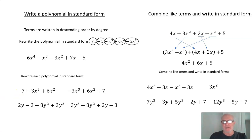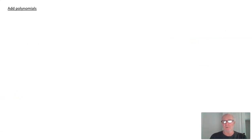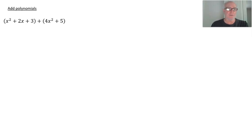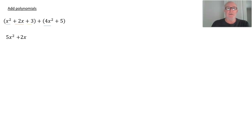Now we want to add and subtract polynomials. First, we're going to add polynomials. We have (x² + 2x + 3) + (4x² + 5). This is really easy — all you're doing is adding like terms. x² + 4x² = 5x². Then we have 2x with no matching x term, so just plus 2x. And 3 + 5 = 8. So the result is 5x² + 2x + 8.